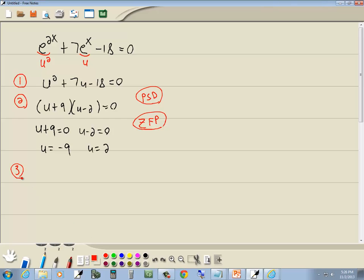Step three: plug u equals blank back in, and solve for x. So whatever we said u was up here, the middle part, is what we would now plug in. So we got e to the x equals negative 9, and e to the x equals positive 2.